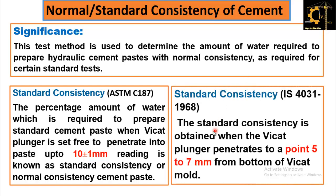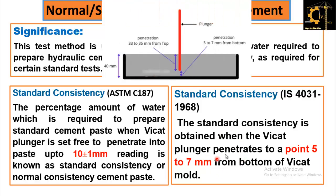In Indian Standard, the standard consistency is obtained when the Vicat plunger penetrates to 5 to 7 mm from the bottom of the Vicat mold. There is a difference in measurement reference: in ASTM standard, it measures from the top — the plunger should penetrate 9 to 11 mm in 30 seconds reading from the top — whereas in Indian Standard it measures from the bottom, requiring 5 to 7 mm from the bottom, or equivalently 33 to 35 mm from the top. In this video, we are going to follow the standard procedure of ASTM C187.